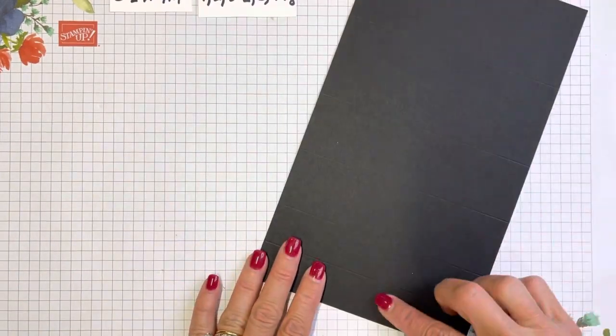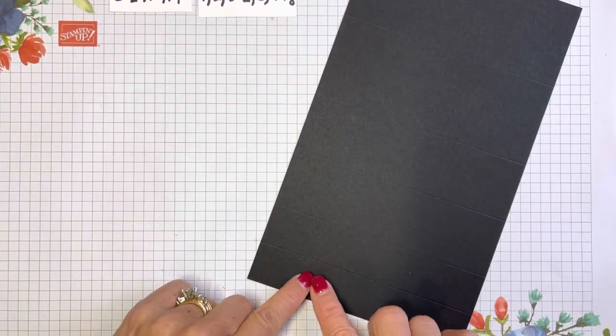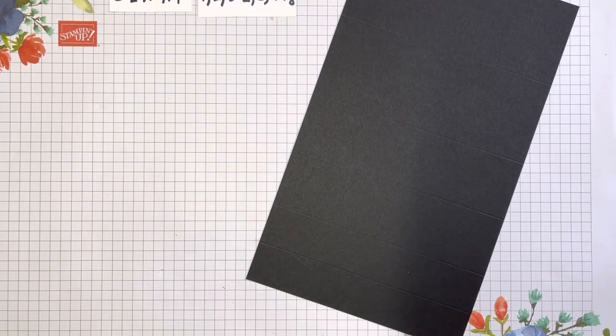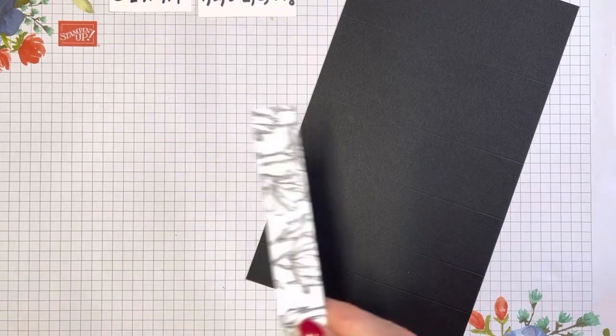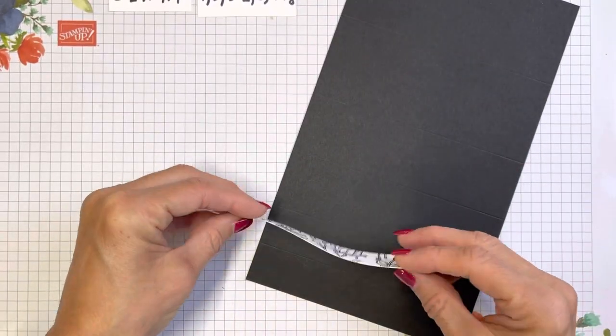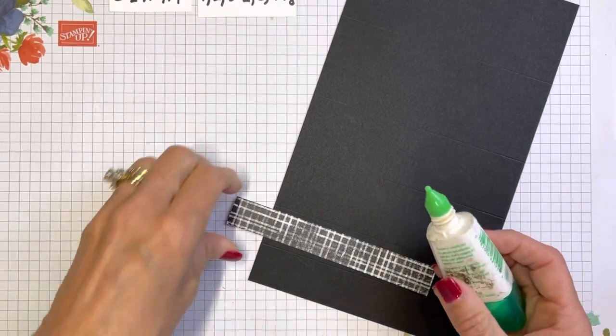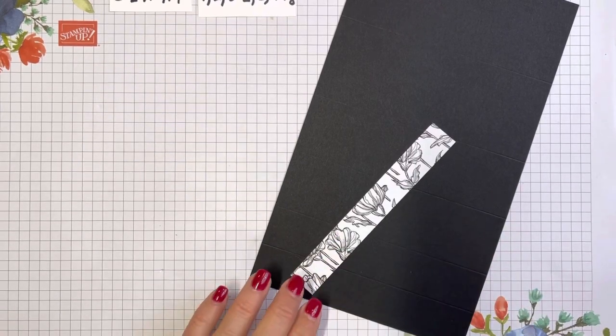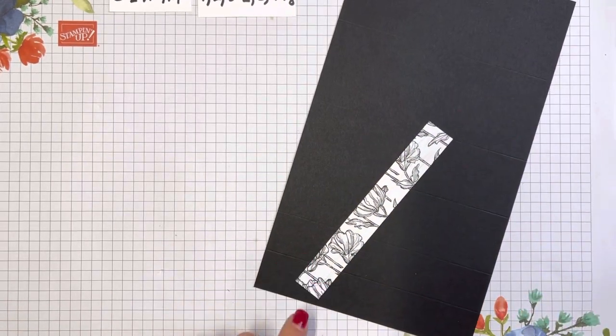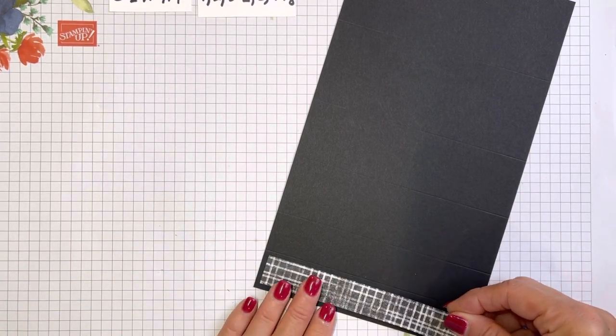That was 5½ by 9¼, score at 1, 2, 3½, 5, 7⅛. These are the pieces of the step. While we have this unfolded, we may just put a DSP on there now while we can really see the score lines.